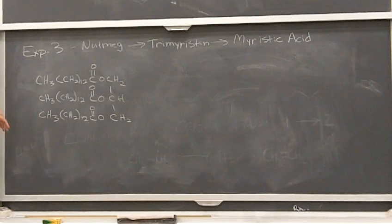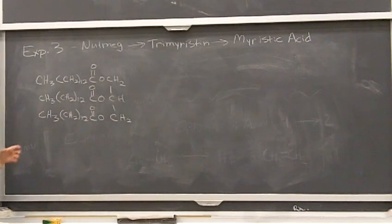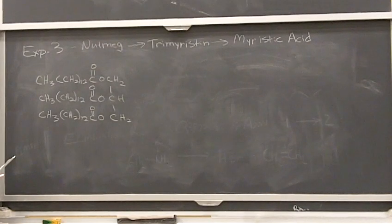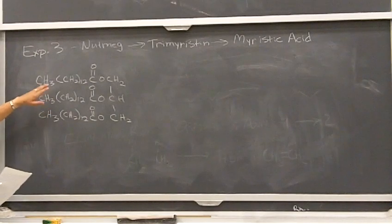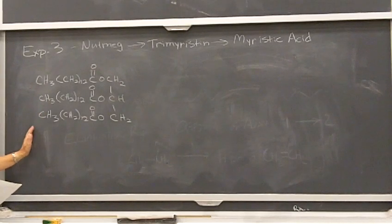Here's our trimeristin. It's a triester because we have three ester groups, of glycerol. It is a fatty acid that we find in nutmeg, and usually most fatty acids are some triester of glycerol — and usually they're a homo-triester, meaning each of these units is the same thing. That's what makes it the homo-triester.